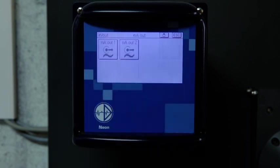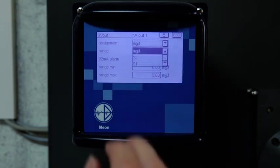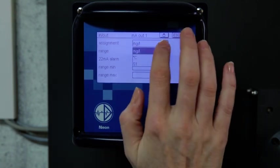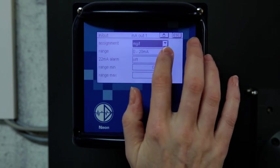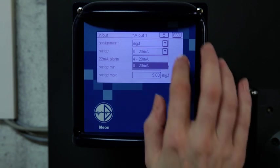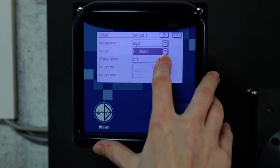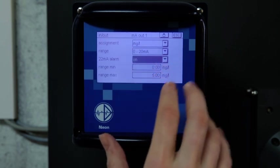We connected one milliampere output that may be used as readout for measured value, temperature value, or control variable. You can choose whether you want to set the output range to 0 to 20 or 4 to 20 milliampere, and whether you want a 22 milliampere alarm to go off in case of faulty measurement information.